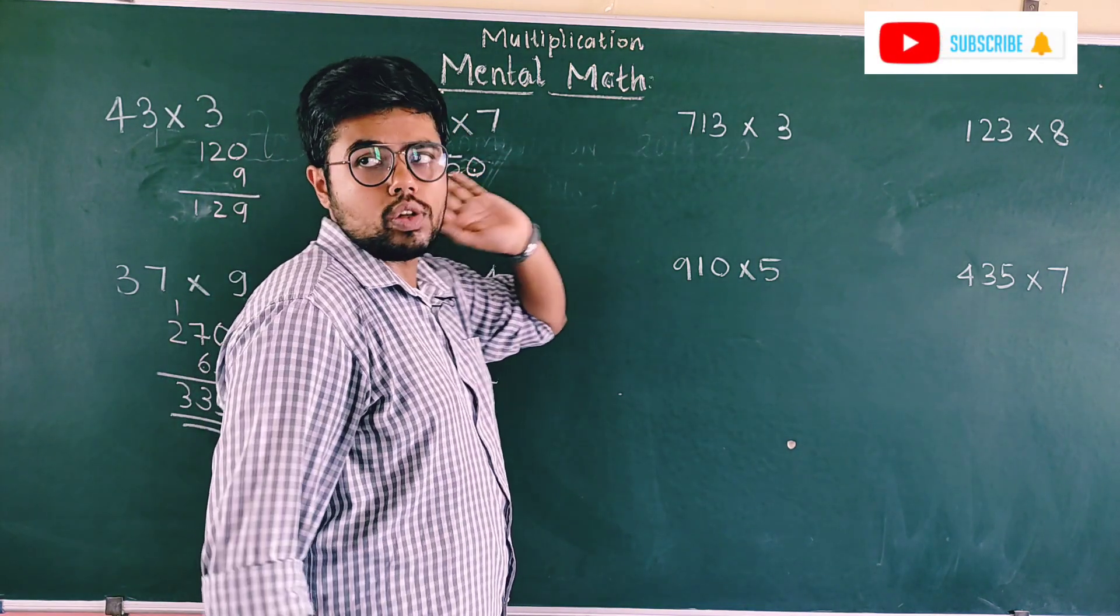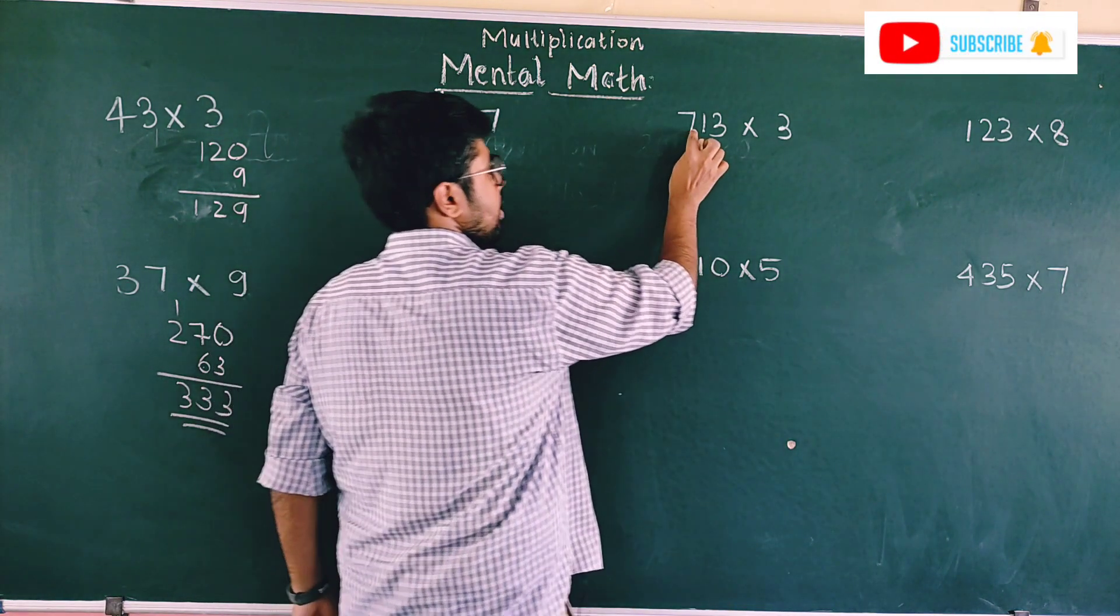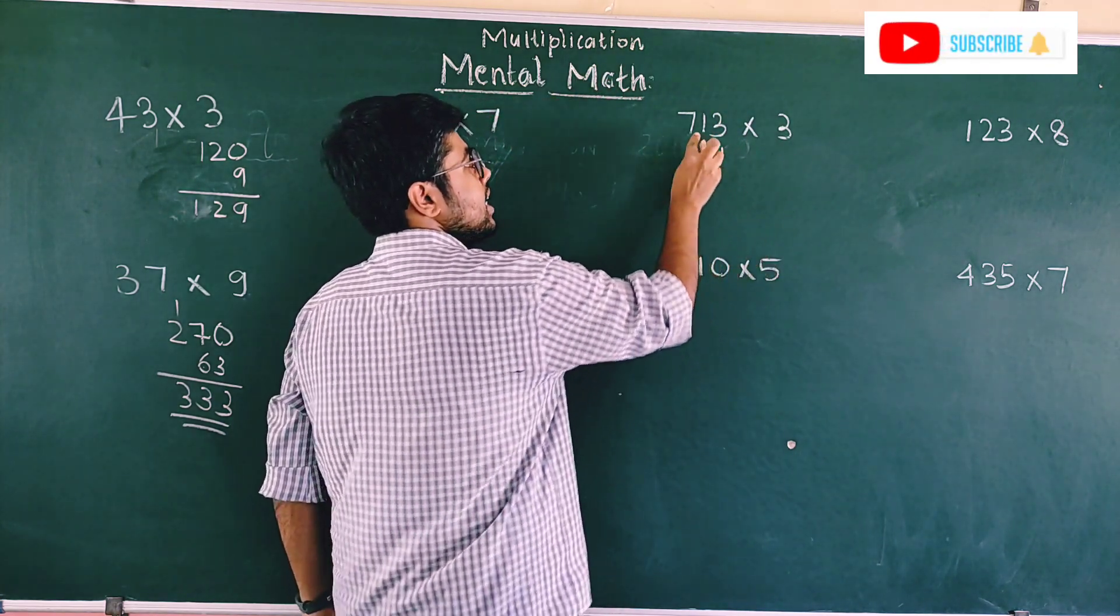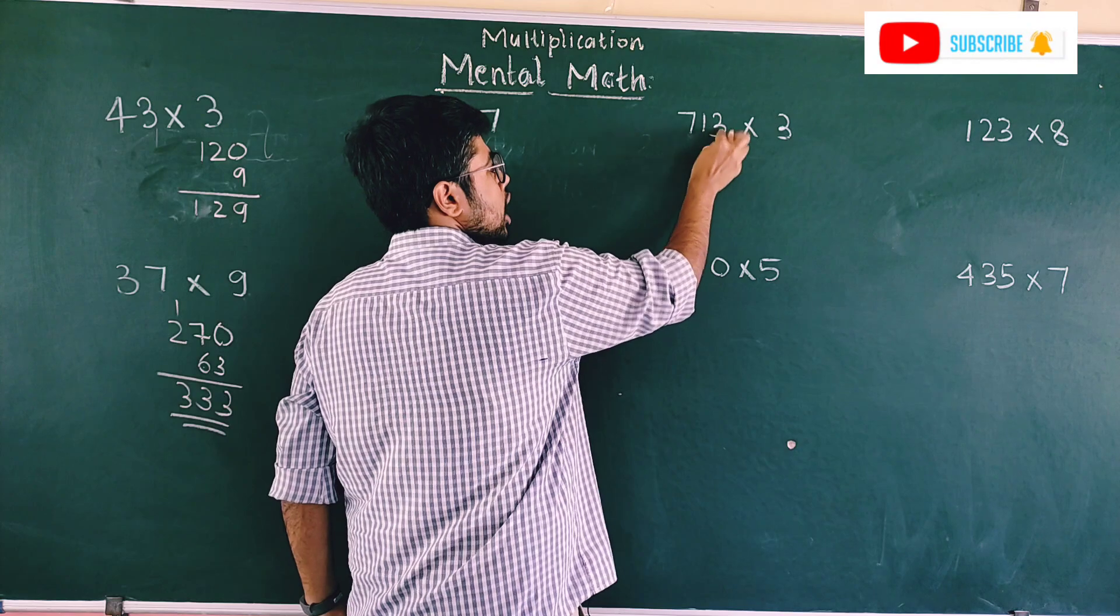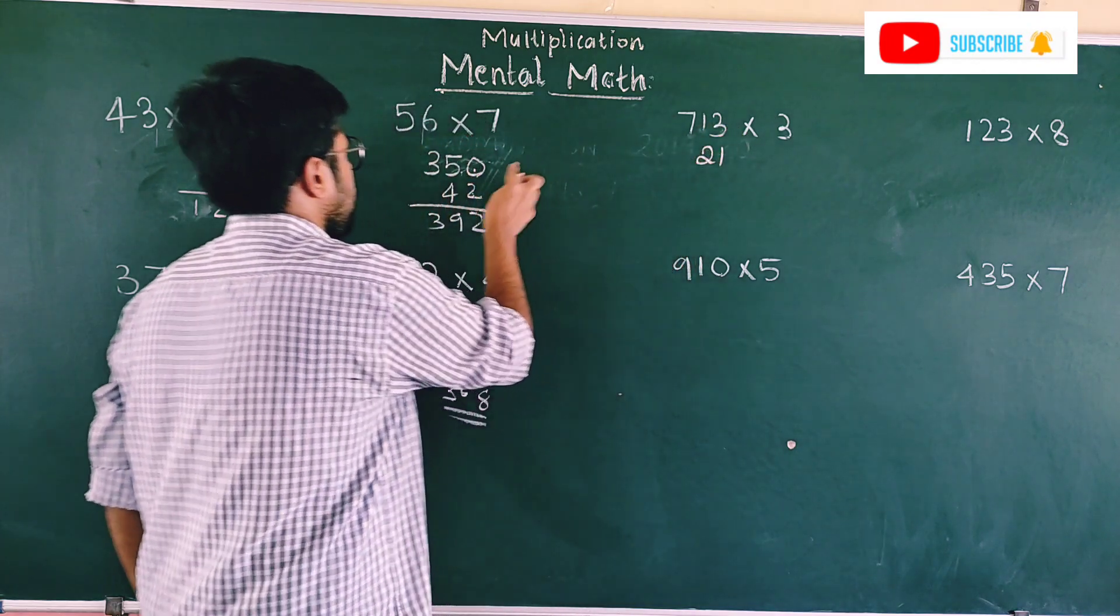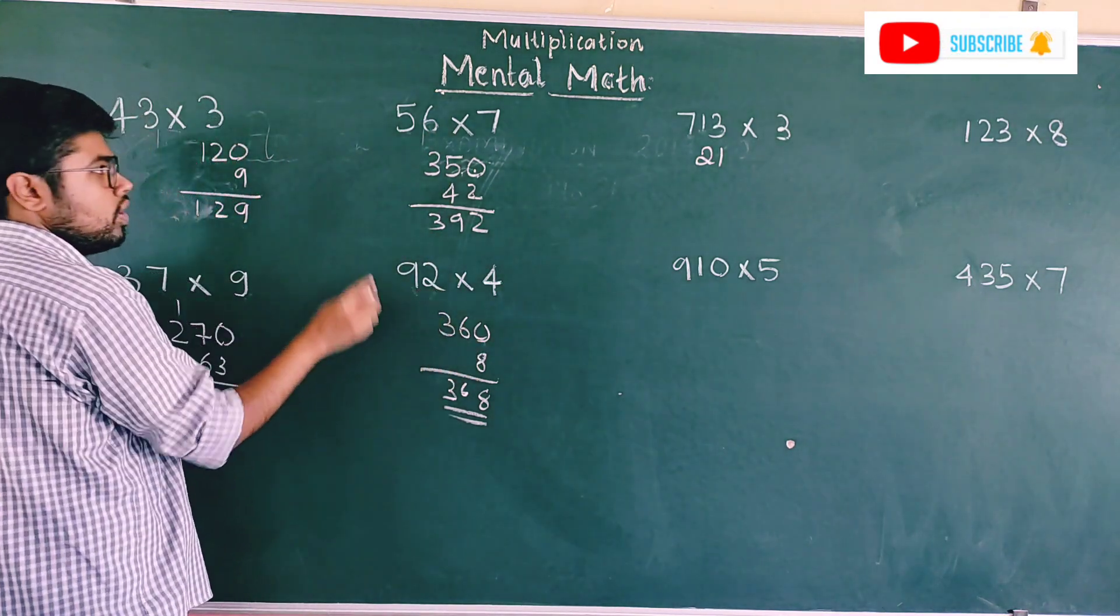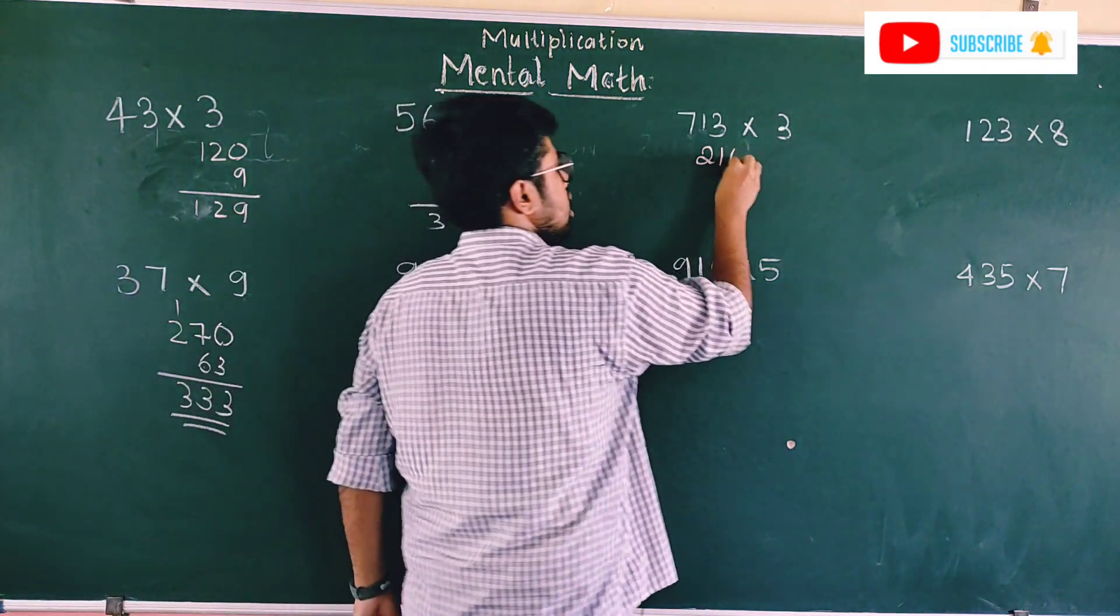It's also easy. See, first multiply 7 times 3 is 21. Then put 2 zeros. Why? It's at hundreds place. There are 2 numbers after 7. Here I put 1 zero because there's 1 number after 5, 1 number after 9. Therefore put 1 zero. Here there are 2 numbers, put 2 zeros.